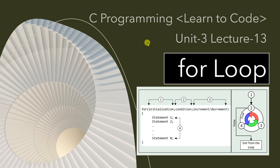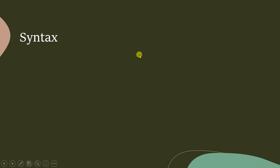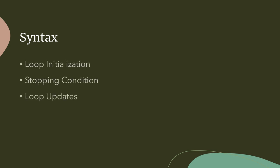Let's begin with the syntax of the for loop directly. To explain the syntax, we need to first introduce the loop control statement. As I have already told you, the loop control statement has three different sections: loop initialization, stopping condition, and loop update.